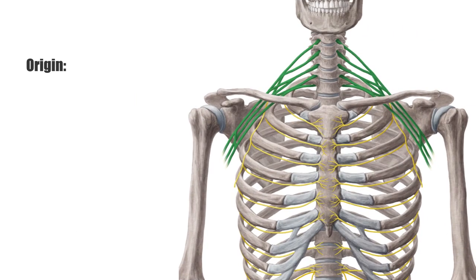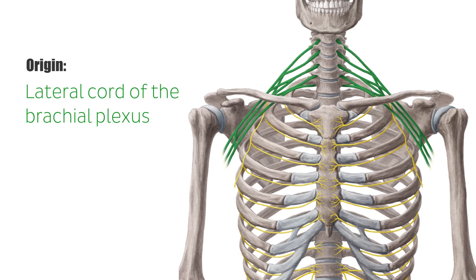The musculocutaneous nerve originates in the lateral cord of the brachial plexus. It starts in the axilla and cuts through the coracobrachialis muscle near its insertion point on the humerus. It continues anterior to the brachialis and dorsal to the biceps brachii, serving as innervation for all these muscles.